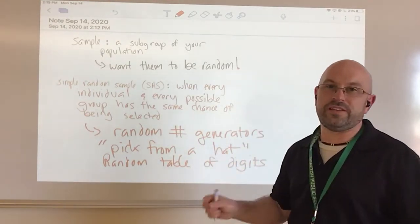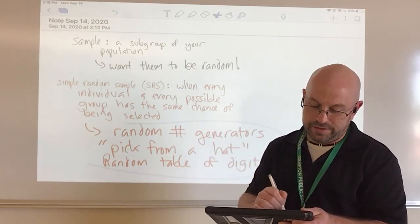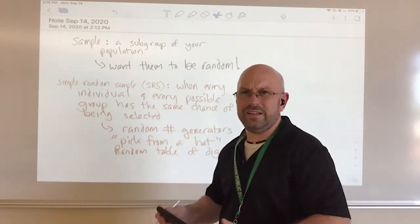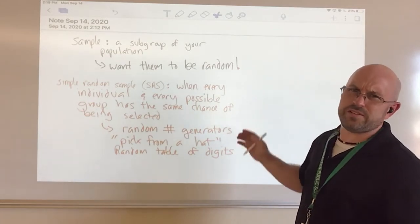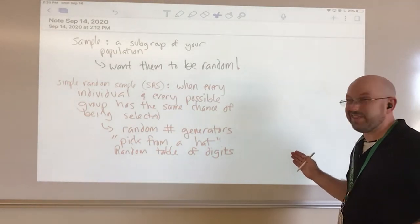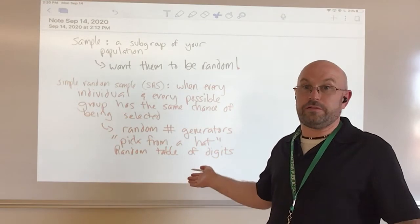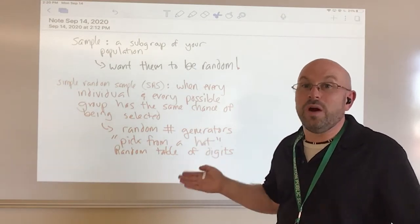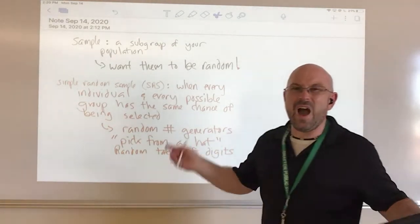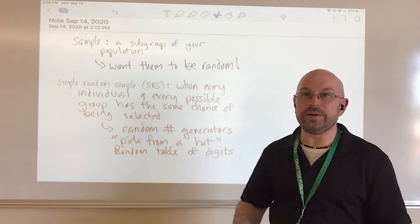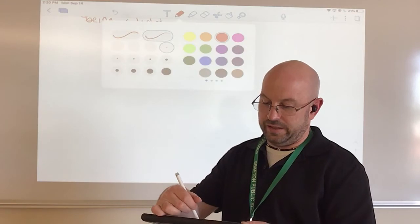To summarize: a Simple Random Sample is when every individual and every possible group has the same chance of being selected. We like these when possible, but sometimes it's not the best approach. For example, with Grafton High School you're not guaranteed a representative group — you could end up with mostly seniors and no freshmen. So how can we ensure we select from every group? That's where a Stratified Random Sample comes in.